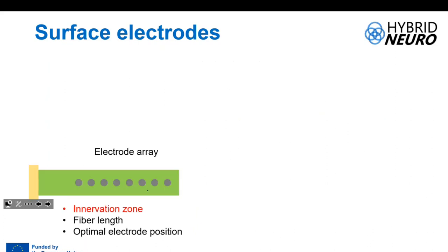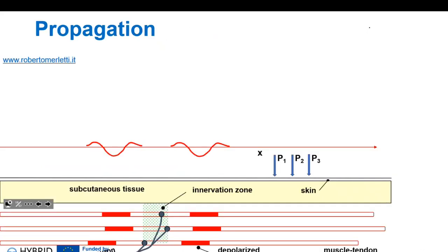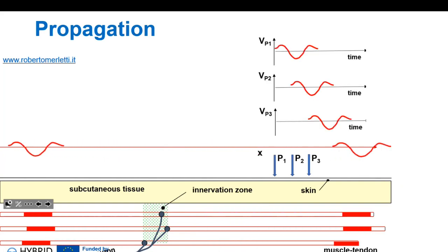Arrays are used in other applications, such as determining the innervation zone or fiber length, and also to determine how to optimally position electrodes. When an action potential travels towards the tendon, if you have three electrodes placed along the array, it will take time for the signal to travel from point one to point two to point three — the same action potential will appear delayed. This delay is due to the conduction time along the muscle fiber.